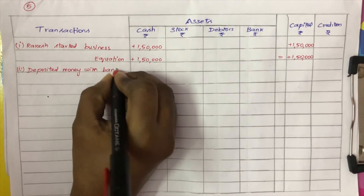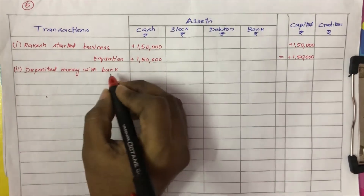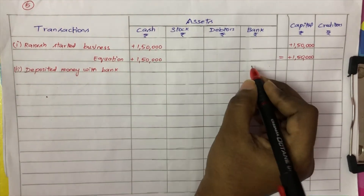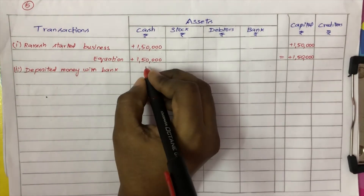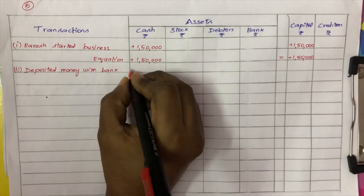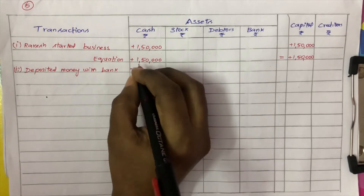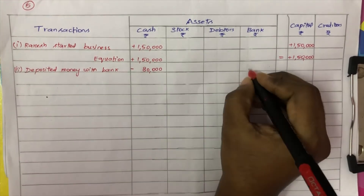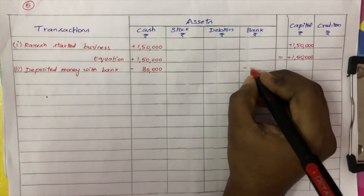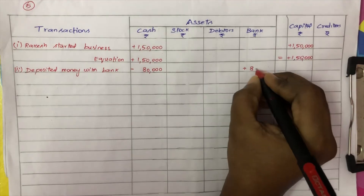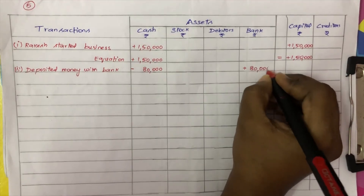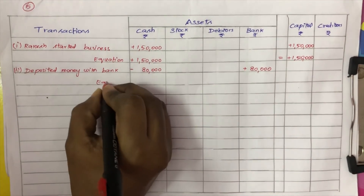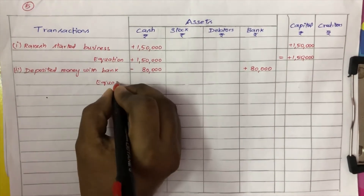Second transaction: deposited money in the bank Rs. 80,000. Cash decreases by Rs. 80,000 minus, and bank increases by Rs. 80,000 plus. The bank amount is credited — added to the bank Rs. 80,000.